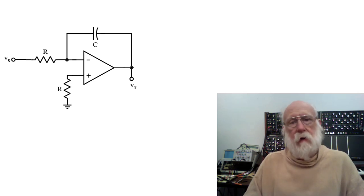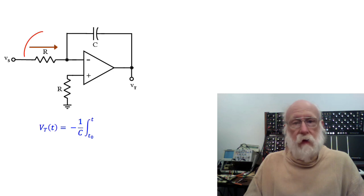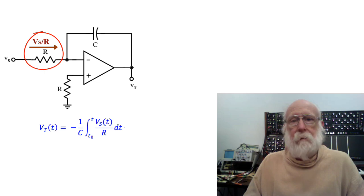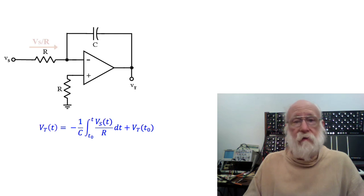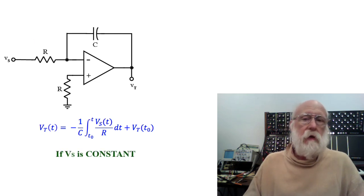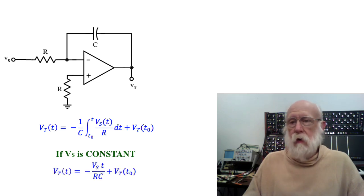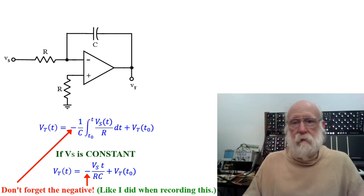Recall for the basic integrator that V sub T, the output, is simply 1 over C times the integral of the current through that resistor, which is just V sub S divided by R with respect to time, plus your constant of integration. If we assume that V sub S is simply a constant, then this reduces to V sub S times T divided by RC plus your initial value of V sub T.